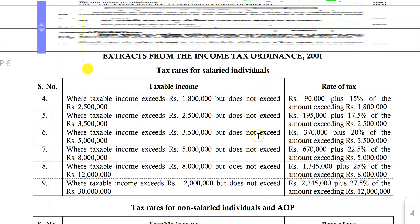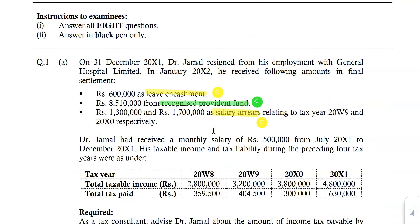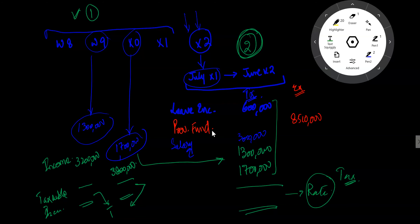So the approach is: make a total of all income, look at the tax rates, and work out the amount of tax. Under choice one, if you tax the salary arrears in the years they relate to — 6,000,000 and 30,000,000 — then 36,000,000 is taxed at the X2 rate. The remaining amount of 3,200,000 is handled separately.